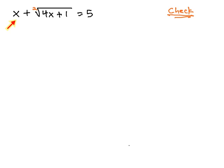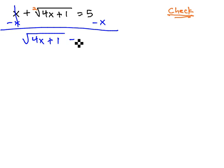If this is the case, we cannot use an exponent yet until the radical is completely alone. So, let's get the x out of the way by subtracting x from both sides. This gives us the square root of 4x plus 1 equals 5 minus x.